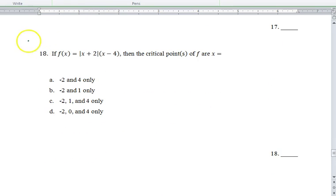If it's calculator active, then you can use your calculator to do it. But f prime, this would be a product rule. First times the derivative of the second plus the derivative of the first, which is what's inside over the absolute value times the derivative of what's inside, times the second.